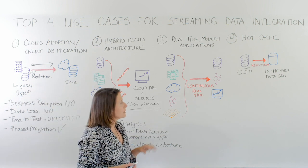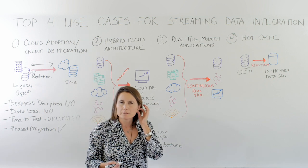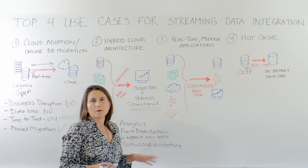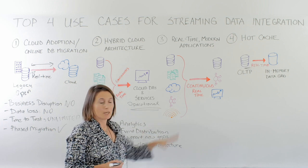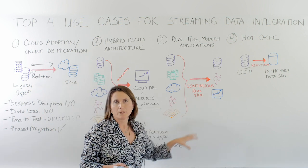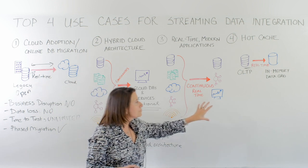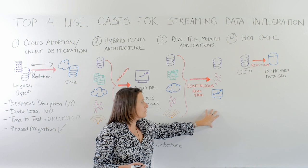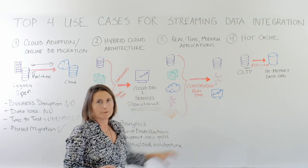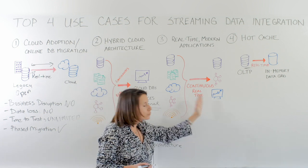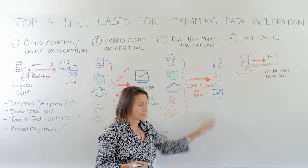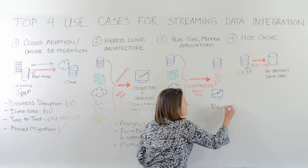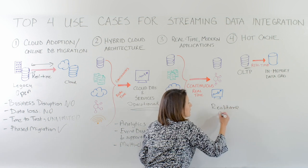A third use case is real-time and modern applications. Cloud is a big trend right now, but not everything is necessarily in the cloud — you can have modern applications on premises. If you're building any real-time app or modern new system that needs timely information, you need continuous real-time pipelines. Streaming data integration enables that so you can run real-time apps with real-time data.